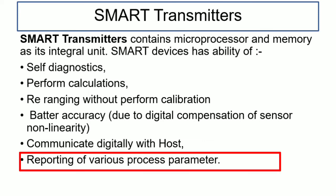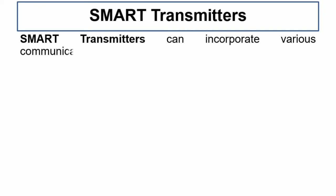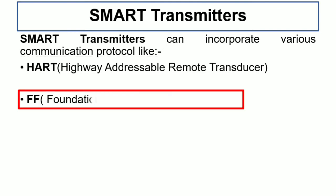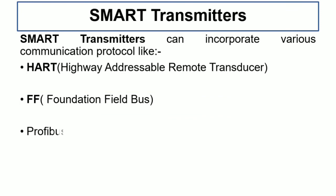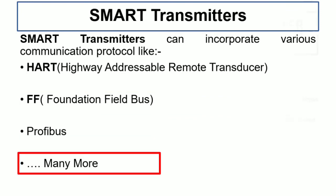Smart transmitters support reporting of various process parameters and can incorporate various communication protocols like HART (Highway Addressable Remote Transducer), FF (Foundation Fieldbus), Profibus, and many more.